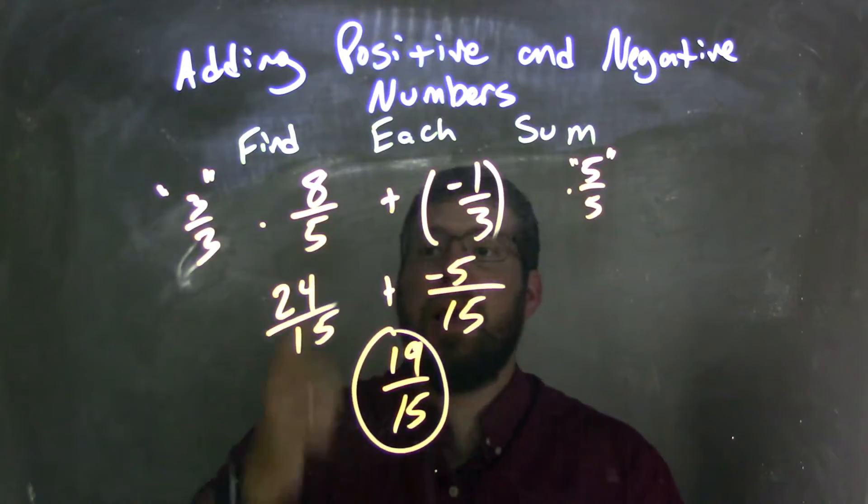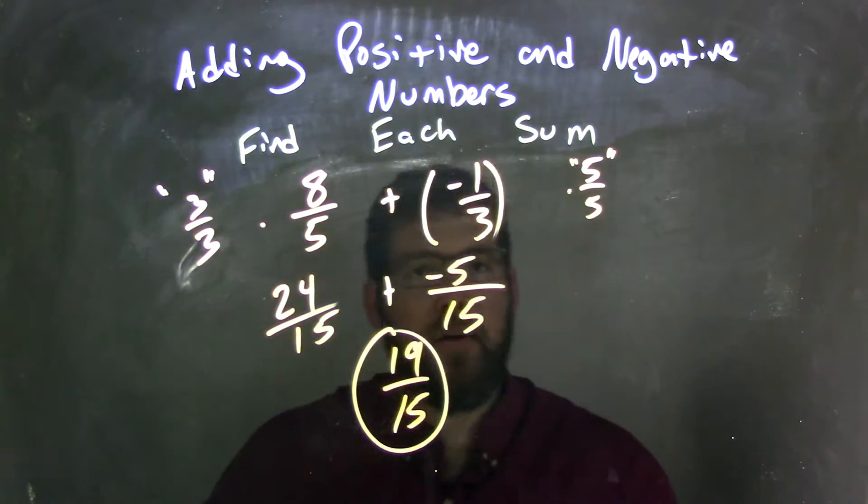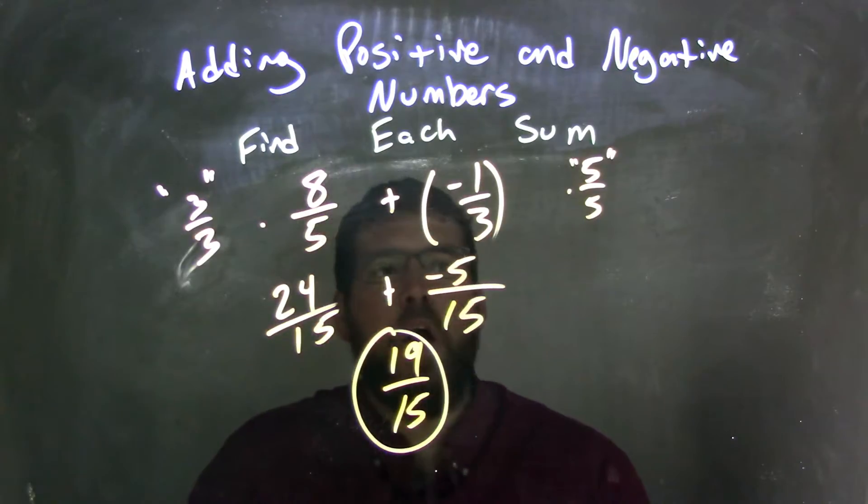So let's start again from the beginning. 8 fifths plus negative 1 third. We add them together. Well, we need to find a common denominator. We know that 5 and 3 both go into 15.